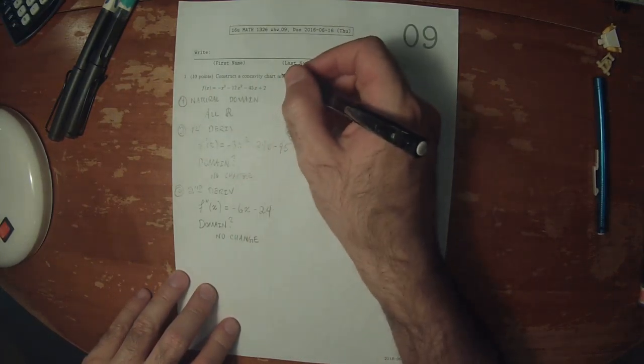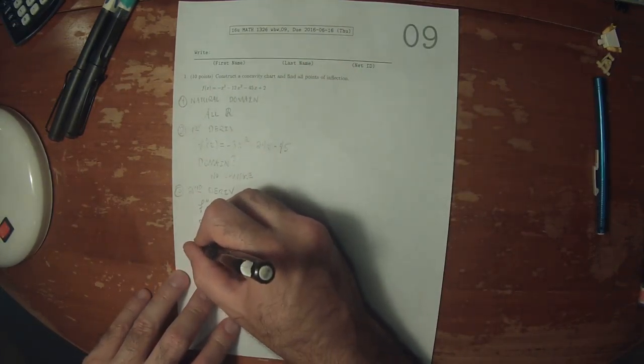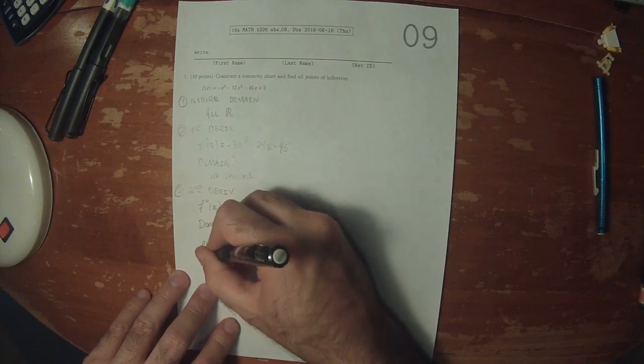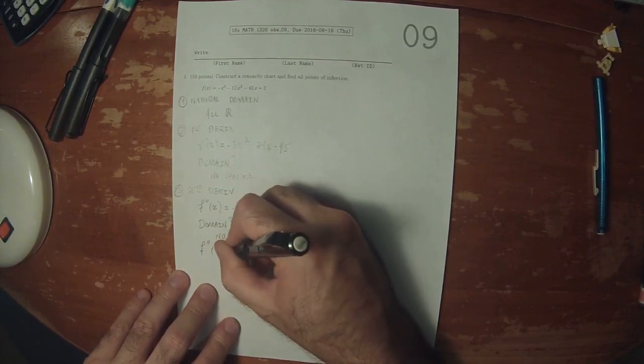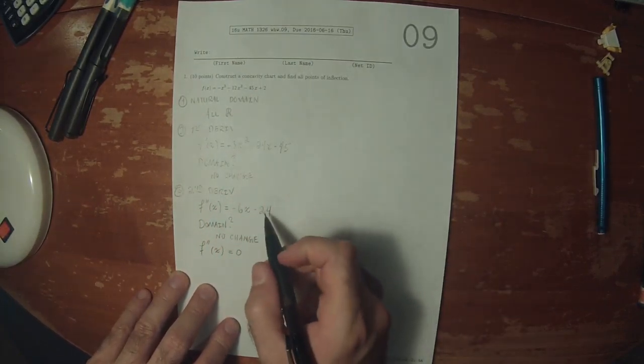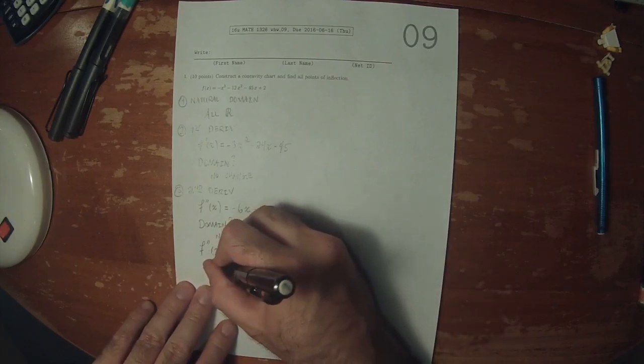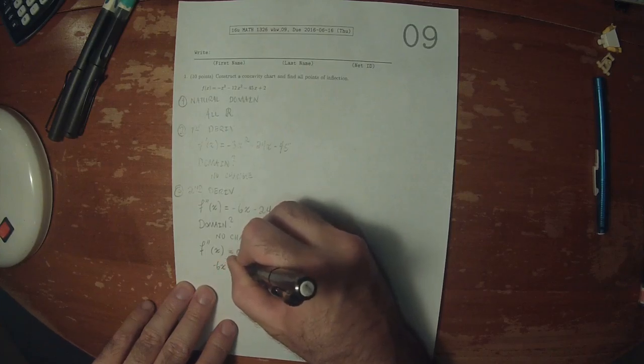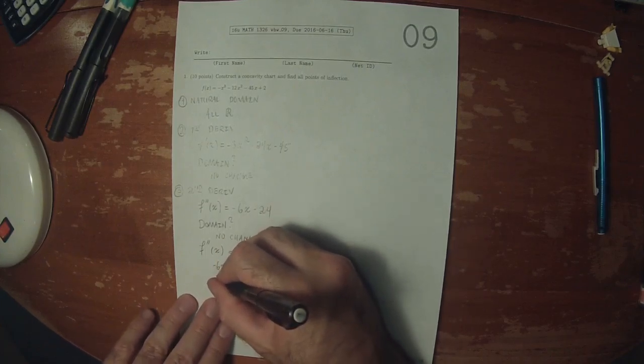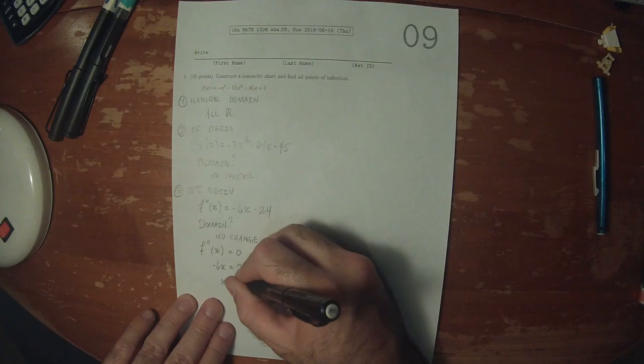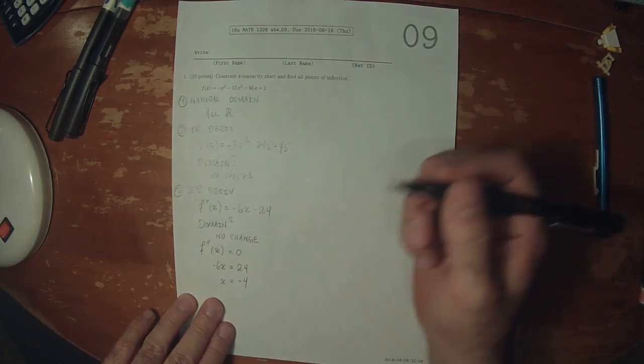Because we're constructing a concavity chart, we need to know the zeros of the second derivative. That occurs exactly when negative 6x is 24. So x is negative 4.